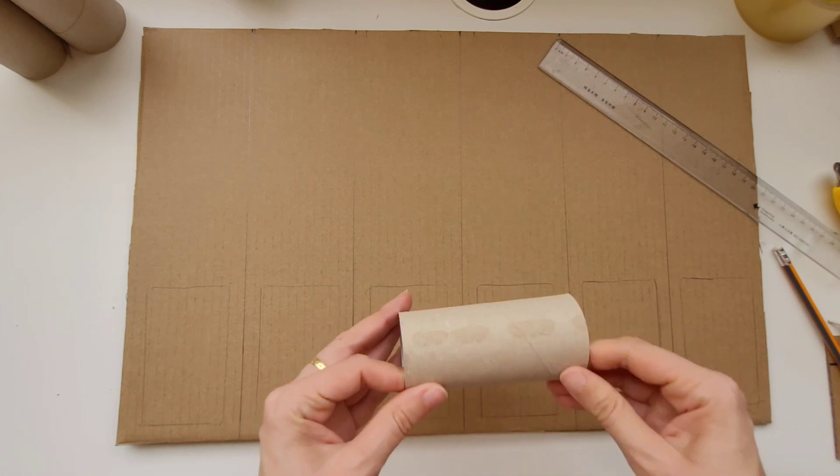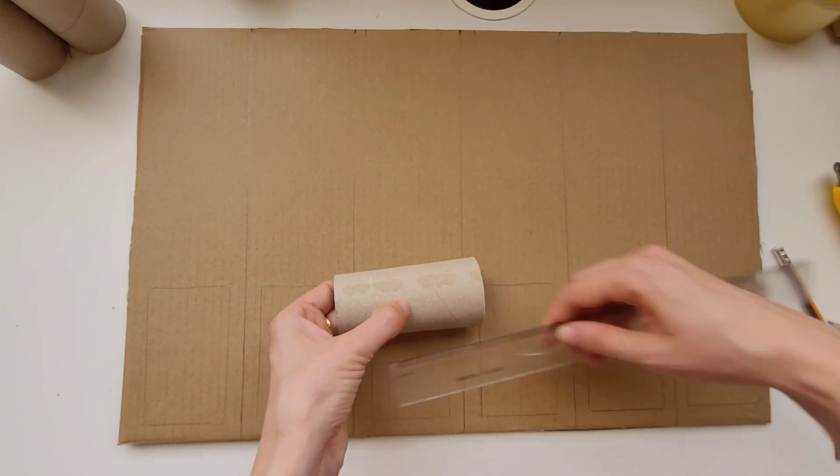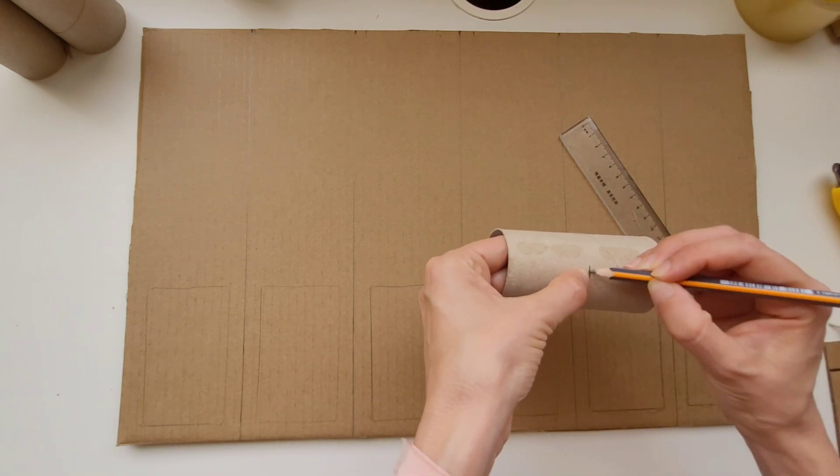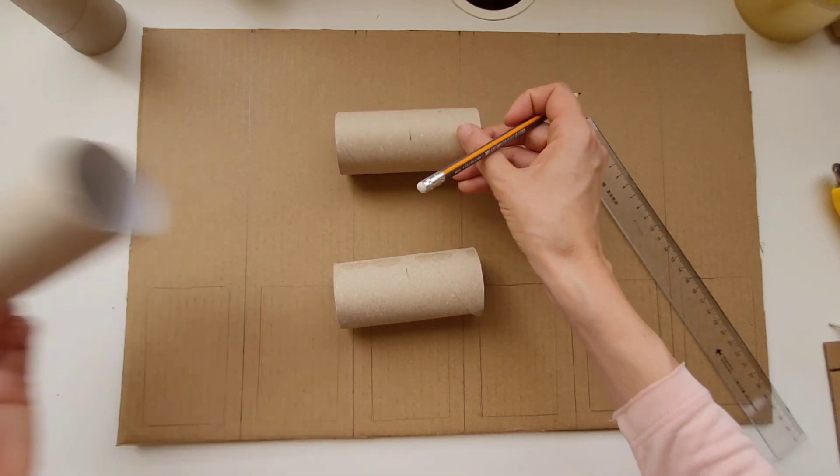Now I'm going to get some toilet paper rolls. I'm going to cut them down the middle, so I'm going to measure it out and then mark the middle. After I mark the middle, I'm going to cut all the paper rolls down the middle.